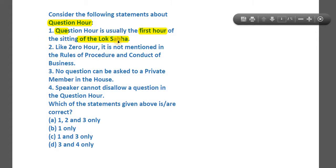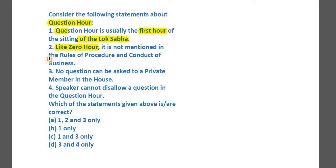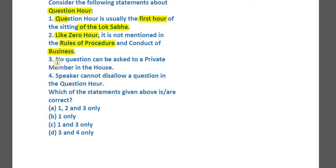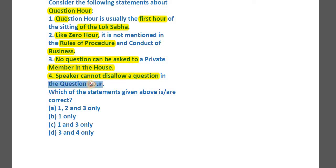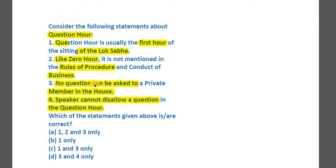Statement number two: like Zero Hour, it is not mentioned in the rules of procedure and conduct of business. Statement number three: no question can be asked to a private member in the house. Statement number four: the Speaker cannot disallow a question in the Question Hour.